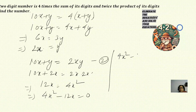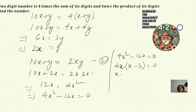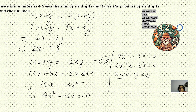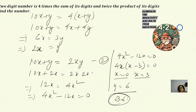Solving the quadratic: 4x common gives 4x into x minus 3 equals 0. So x equals 0 or x equals 3. We can't take x equals 0 because that would reduce it to a single-digit number. So x equals 3. Then y equals 2 into 3, which is 6. The number becomes 36. The reversed number would be 63.